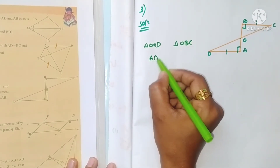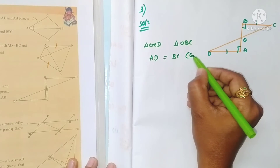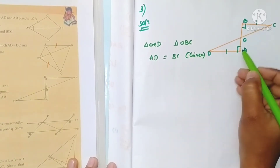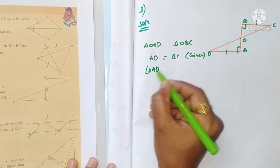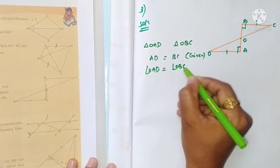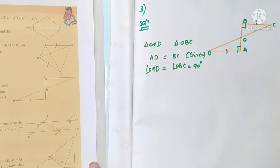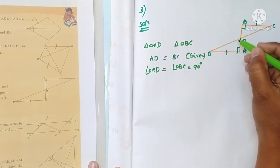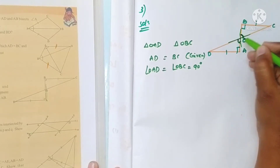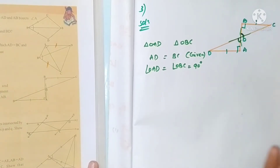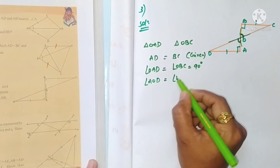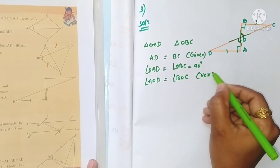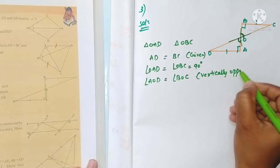In triangle OAD and triangle OBC: AD is equal to BC — given. Angle OAD is equal to angle OBC, both equal to 90 degrees — they are both right angles. And these two lines are intersecting lines, so the angles at O are vertically opposite angles. Vertically opposite angles are equal, so angle AOD is equal to angle BOC.